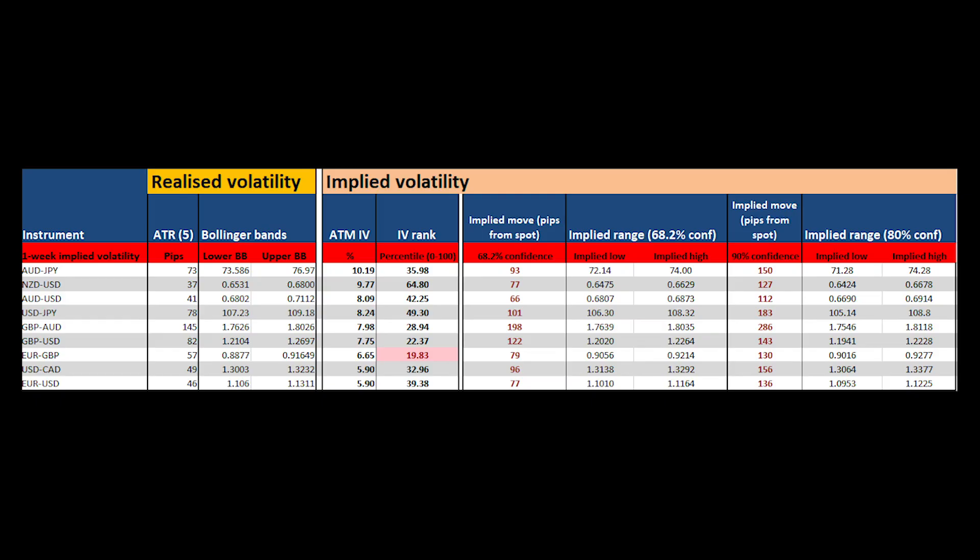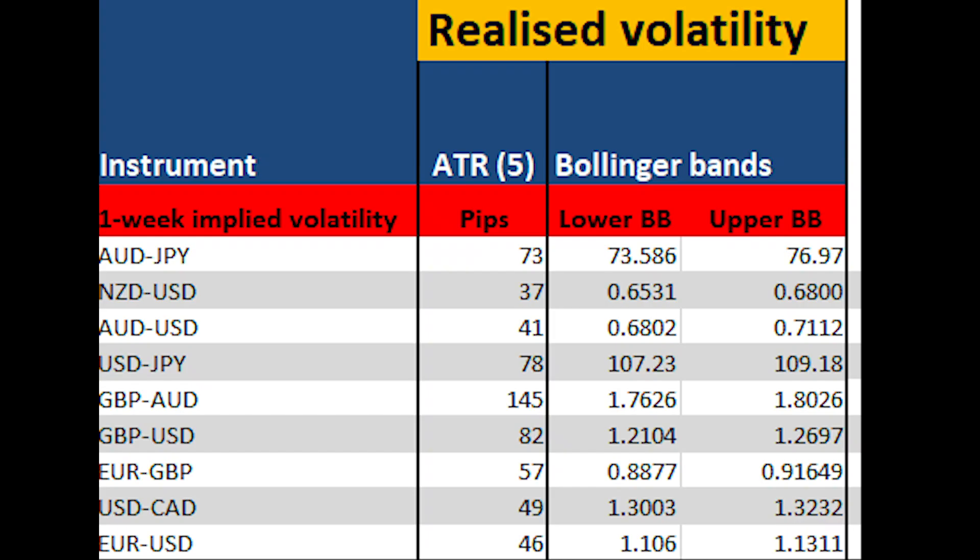As we go into the new week, the UK GDP numbers are out, but they're backward-looking. What really matters is what's going to happen with the pound going forward. Looking at this table, we can see various realized volatility metrics — things like Average True Range and Bollinger Bands — across a number of pound crosses. The Average True Range is around 82 points.